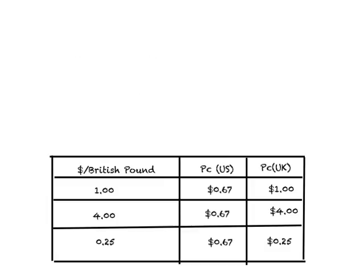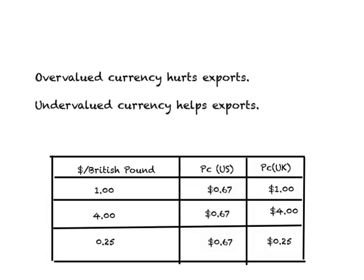When 1 dollar equals 1 British pound, the U.S. was exporting clothing. But when 1 dollar equals 4 British pounds — meaning the value of the dollar has risen in the international market — the U.S. starts to import clothing from other countries. This is an important principle: an overvalued currency will hurt exports, and an undervalued currency will help exports. This completes our discussion of the Ricardian model. Thank you for your time.